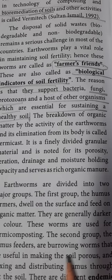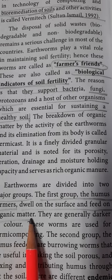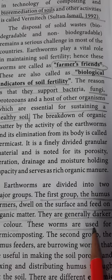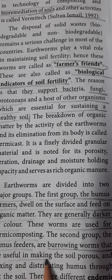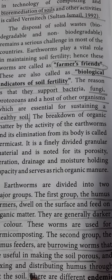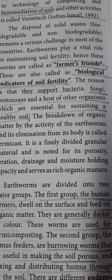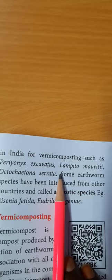Earthworms are divided into major groups based on their geographical habitat. The first group is called humus farmers — they dwell on the surface, feed on organic matter, are generally darker in color, and are used for vermicomposting. The second group is called humus feeders — they are burrowing worms useful for making soil porous, improving aeration, and distributing humus throughout the soil. There are also native and endemic species, and earthworms cultured in India for vermicomposting.